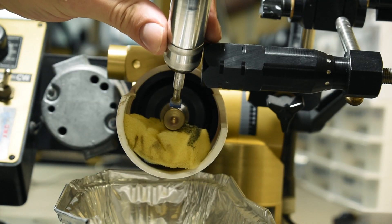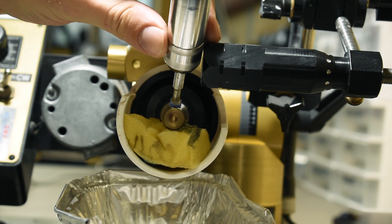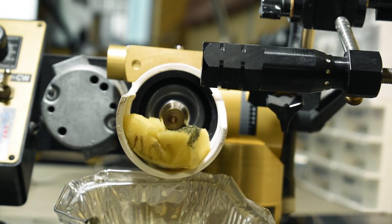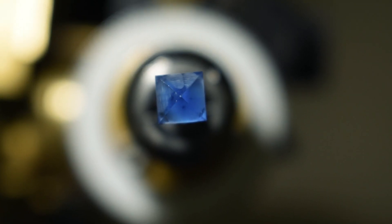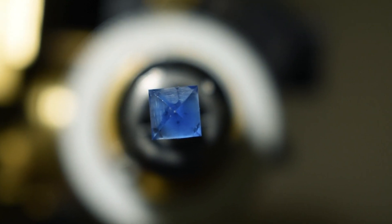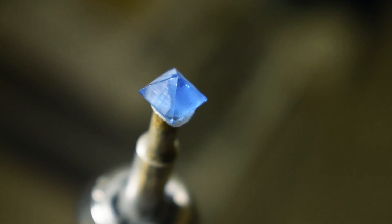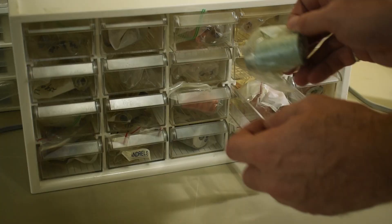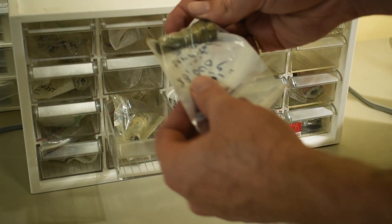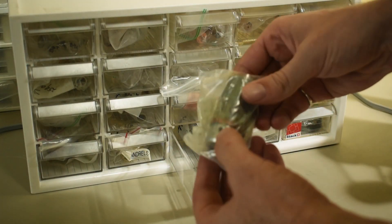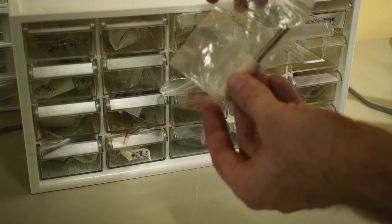After you cut your facets you can then switch the mandrel to a polishing mandrel and polish it. Many types of polishing mandrels are available for this machine including copper, brass, bat, dark side, maple, corian and more.